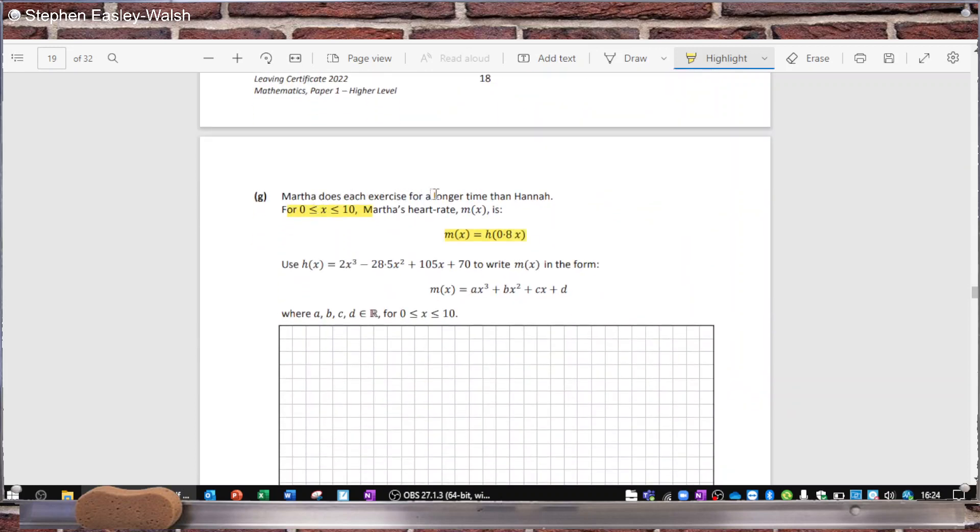Why is that important? Because later in the question it says Martha does each exercise for a longer time than Hannah. Martha's heart rate is H(0.8x). Now you could say it did say in the question here from 0 to 10, but the problem is that 0 to 10 is referring to the answer. It's saying that the equation that you're supposed to find is for x is between 0 and 10, and the way you find it is by using this formula. But the problem is this formula is not defined between 8 and 10.